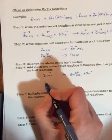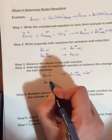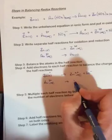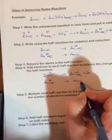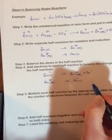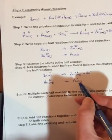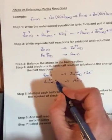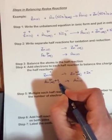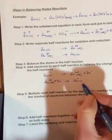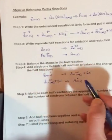And then for gold: Au three positive on the reactant side going to Au solid on the product side. And the gold solid has an oxidation number of zero, so I need to add my electrons on the reactant side so the charge over here will be zero.